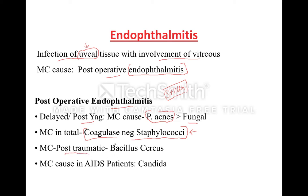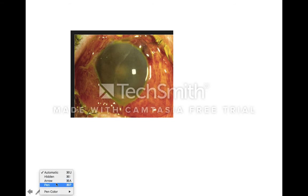If they ask the most common cause of post-traumatic endothalmitis, the answer is Bacillus cereus. Remember, if Bacillus cereus is not given in the option, go for fungal infection. If they ask the most common cause of post-operative endothalmitis in an AIDS patient, the answer should be Candida.